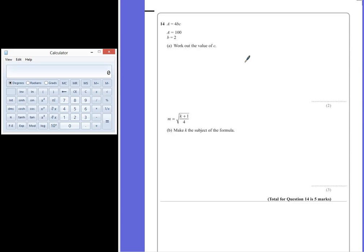Question 14. A equals 4BC. If A equals 100 and B equals 2, question A asks us to work out the value of C.